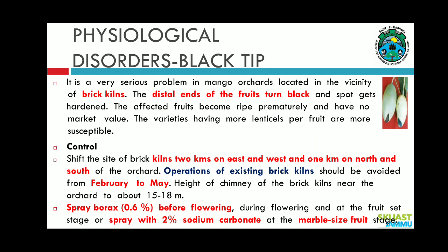Now coming to the physiological disorder black tip. This is a very serious problem in mango orchards located in the vicinity of brick kilns. The distal end of the fruit turns black and the spots get hardened, as seen in the figure. The affected fruits become ripe prematurely and have no market value. Varieties having more lenticels per fruit are more susceptible.